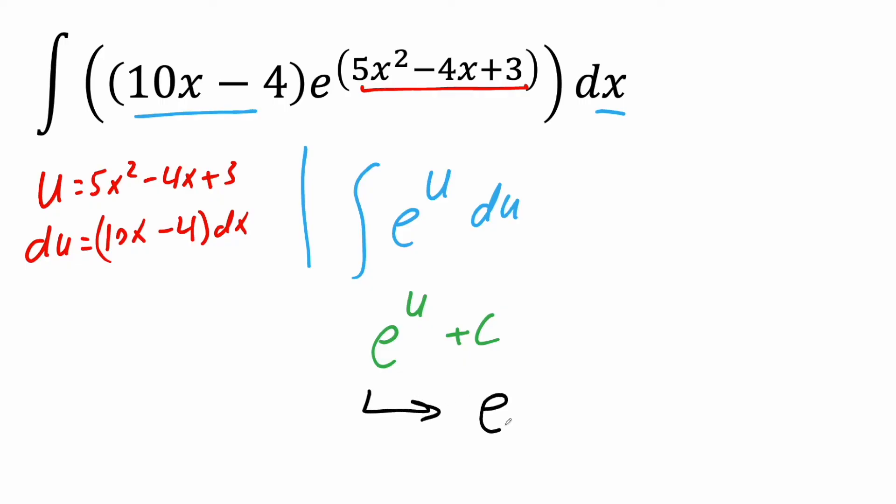So our final answer will be e raised to 5x squared minus 4x plus 3, close it, plus c. This right here is your final answer,